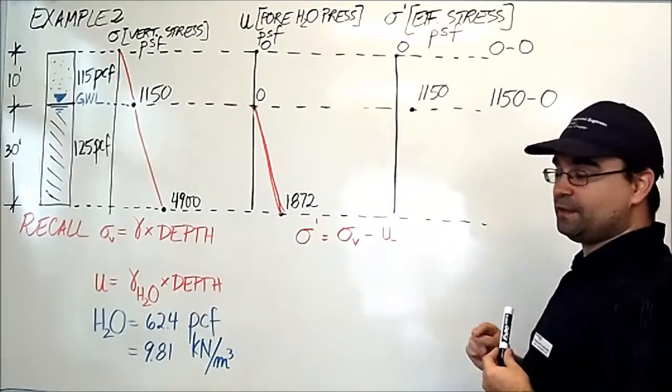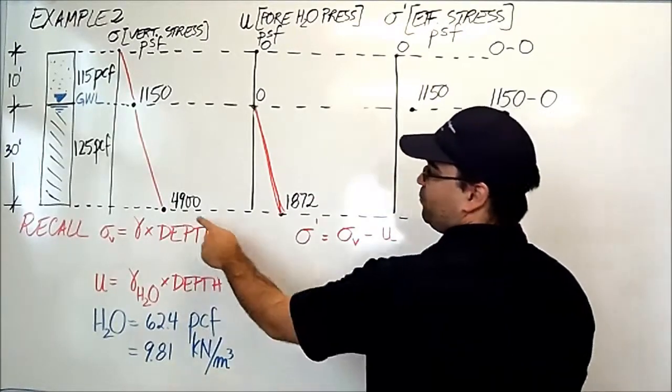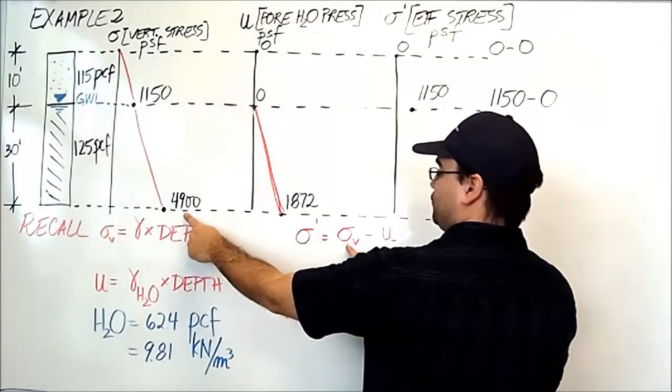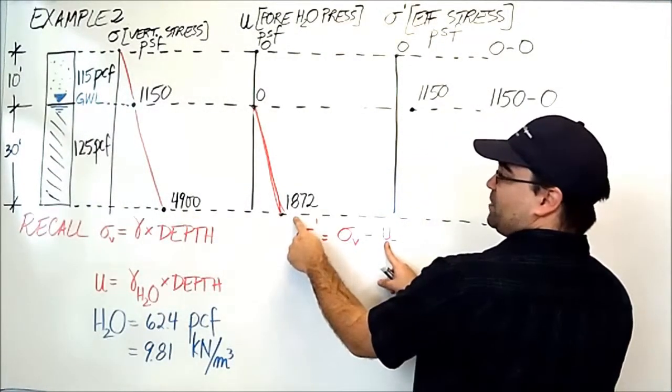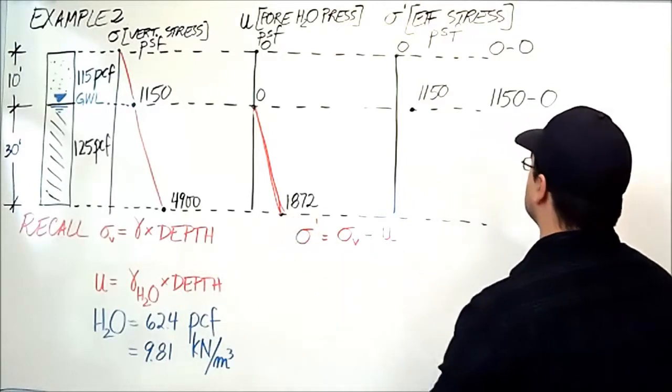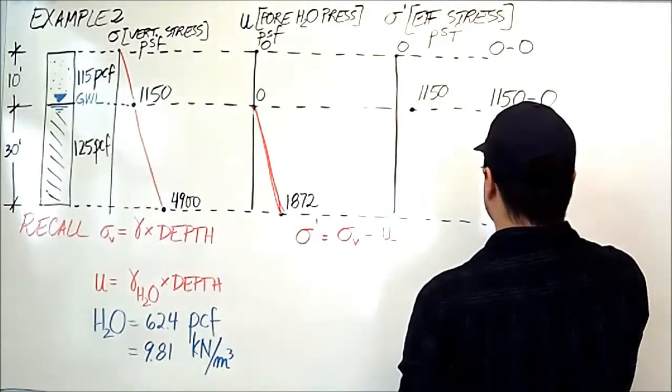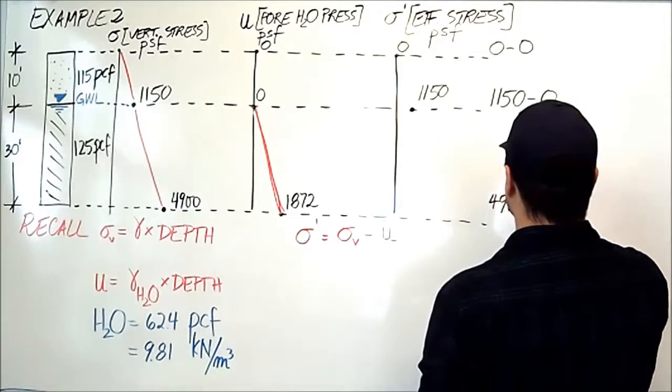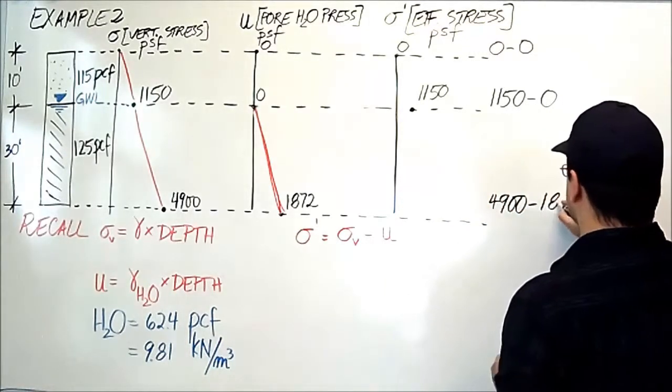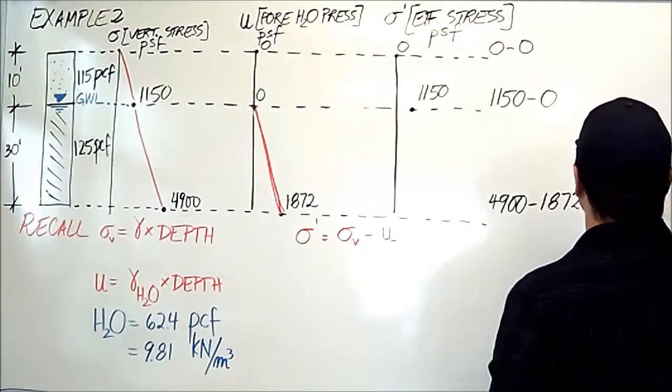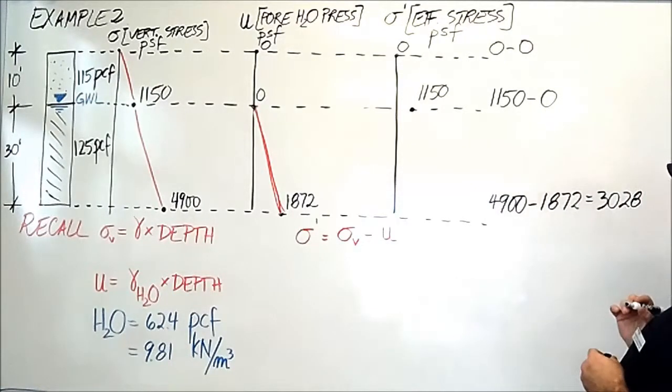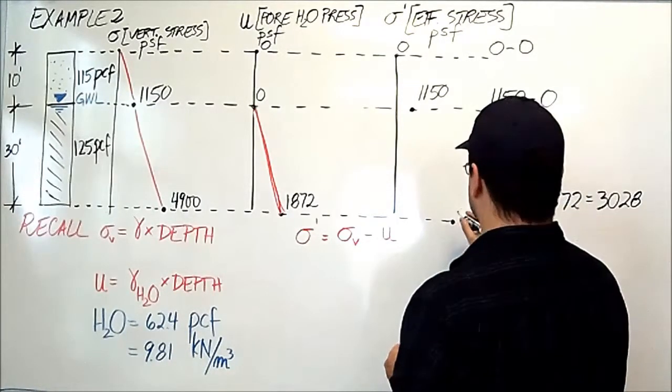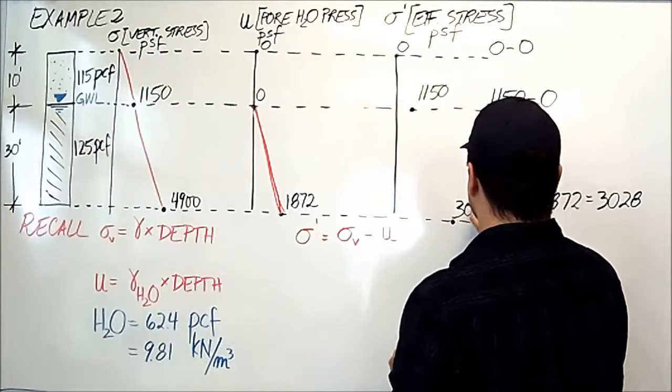The bottom one: 4,900 for the vertical stress minus 1,872 for the pore pressure gives us 4,900 minus 1,872 gives us 3,028. So that's the number I'm going to put here: 3,028.